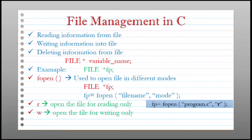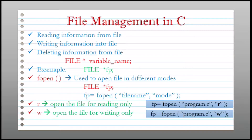The next mode is w. "w" opens the file for writing only. When you write w in double quotes as the mode, you can only write information into the file opened by fopen. In the example you can see we are opening program.c and the mode is w, meaning this particular file is opened to write something into it.